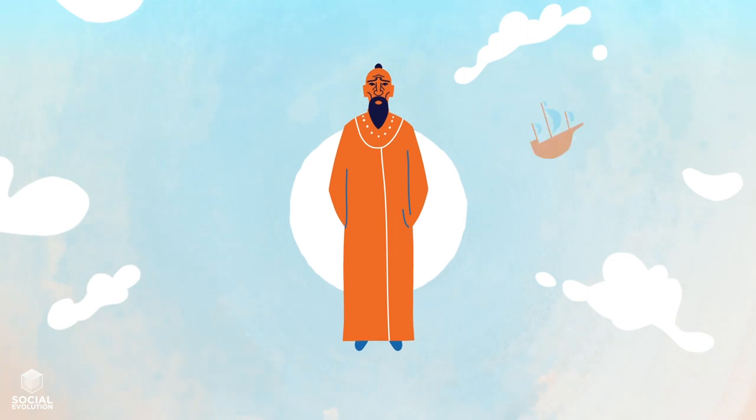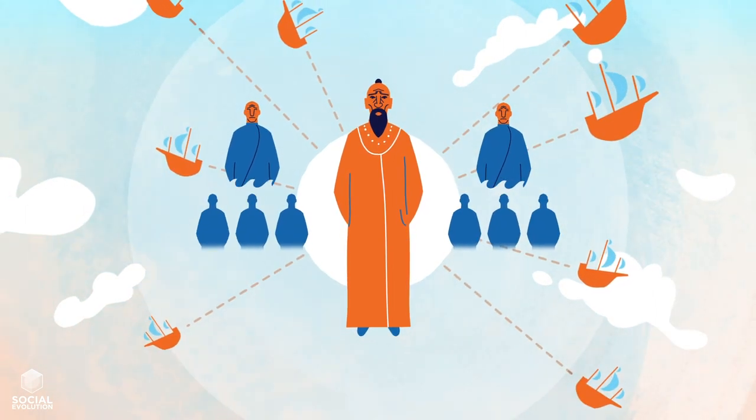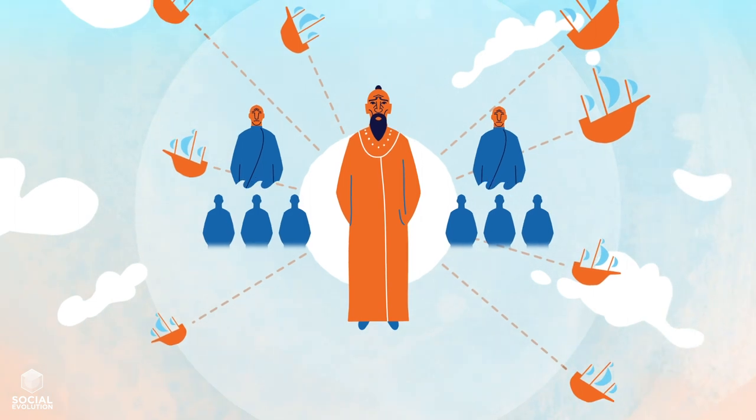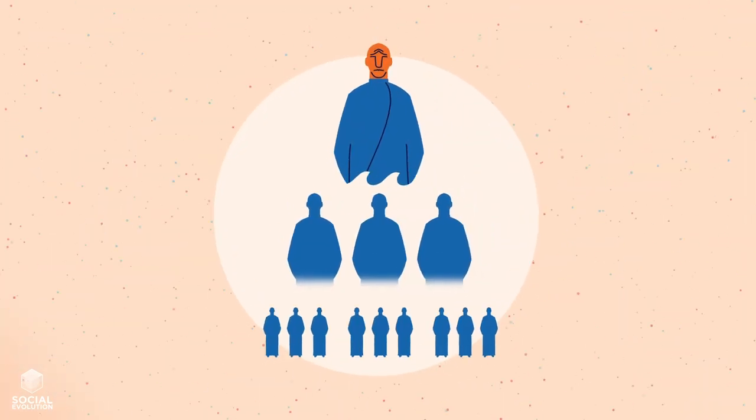To protect and enrich themselves, dominant kingdoms expanded through conquest, suppressing people in new territories. A hierarchy of governors managed the increasing complexity of empire.